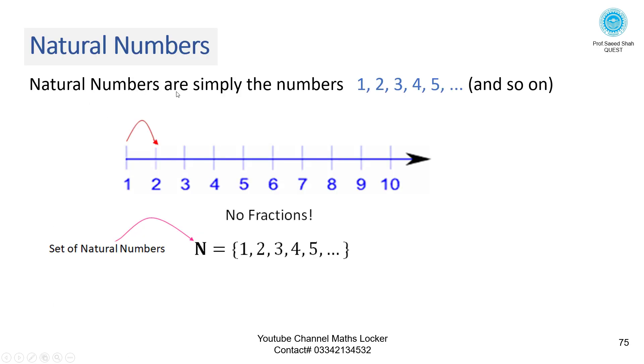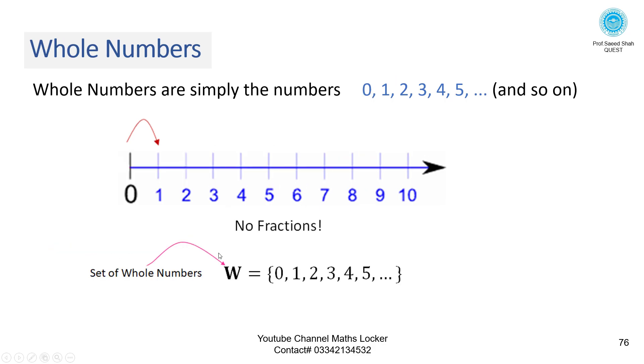Natural numbers are simply the numbers 1, 2, 3, 4, 5. This process continues. On the number line, jump from 1 to 2, 2 to 3. No fractions in the set of natural numbers. Whole numbers are simply the numbers starting from 0, 1, 2, 3, 4, 5. This process continues. On the number line, no fractions. Jump from 0 to 1, 1 to 2, 2 to 3. Set of whole numbers.